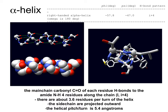For right-handed alpha helices, which are predominant, phi is about minus 57.8 and psi is about 47.0. The main chain carbonyl of the alpha helix has hydrogen bonds to the amide NH of the I+4 residue, which stabilizes this conformation. There are about 3.6 residues per turn. Looking down the barrel of the helix, the residues are projected outwards, and the helical pitch per turn is 5.4 angstroms. The first and last amino acids of an alpha helix can also provide hydrogen bonds.